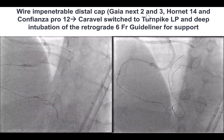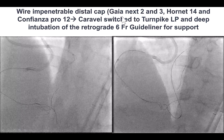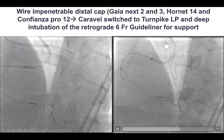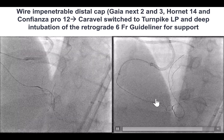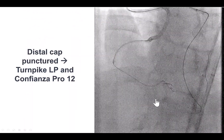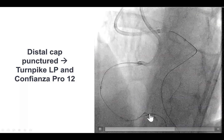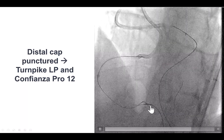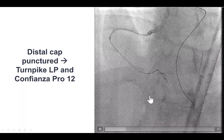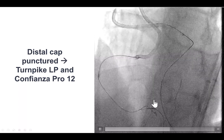We used a Gaia Next 2 and 3, Hornet 14, Confianza Pro 12, and changed again to a Turnpike LP microcatheter. We had a guide extension but still had a lot of difficulty. Eventually, using a Confianza Pro 12 guide wire, we were able to puncture through the distal cap and advance along the course of the antegrade guide wire.